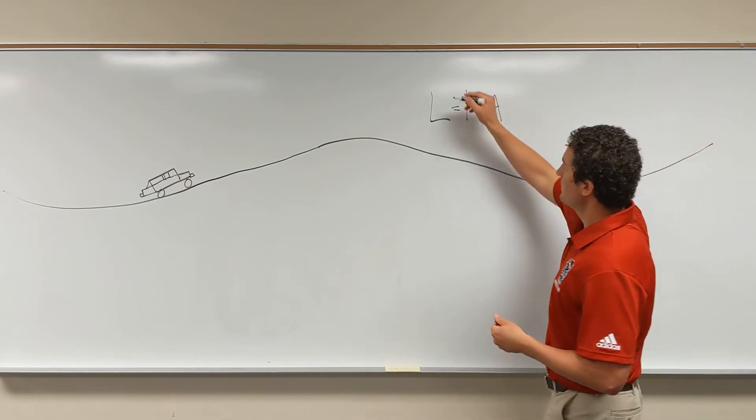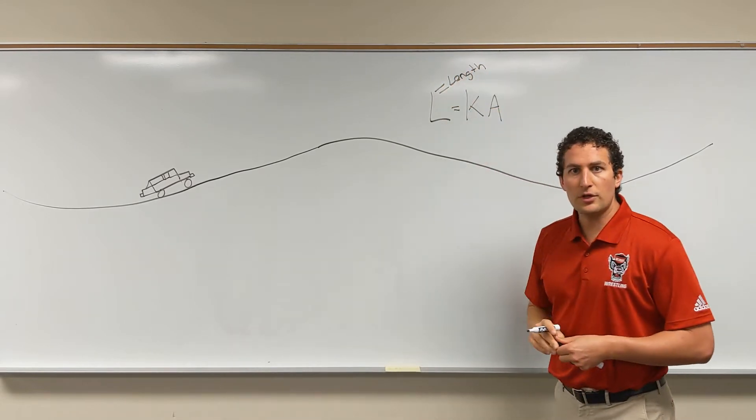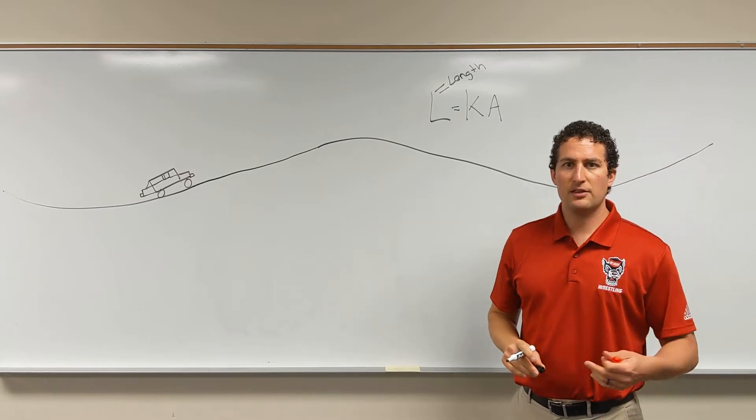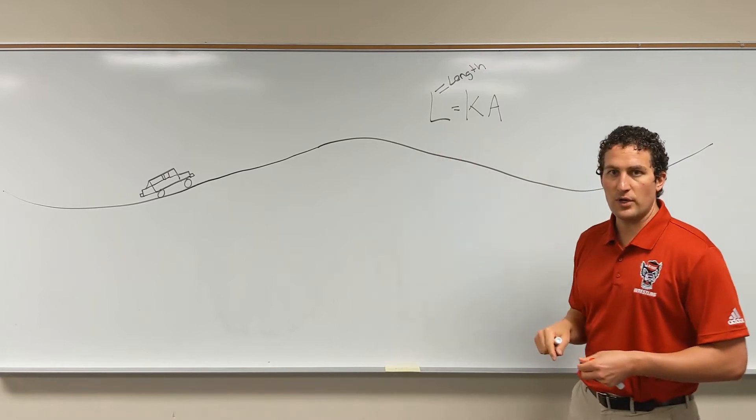L is the length. When we're looking to establish the minimum length of a vertical curve, this is all measured horizontally, we're going to use this equation.